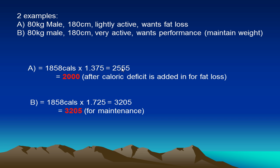Now take Person B — same height and weight, so a fairly similar basal metabolism — but their activity level is much higher. We're going to take the very active multiplier of 1.725 times basal metabolism, which gives us 3,205 calories. Because we want to maintain weight while sufficing these needs, we'll keep it around there. Depending on this person's activity level they may need to tweak it — if over time they're losing weight they may need to go up to the 1.9 factor — but for now let's use these figures.